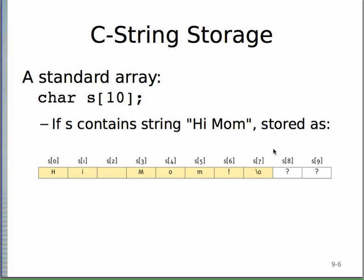In memory, arrays always have contiguous storage — location zero is right next to location one, which is right before location two, and so on. This is true for arrays in C++, C, Java, and C#. It's why using loops with arrays is very efficient: the loop just steps through consecutive memory locations, which is easy to optimize at a low level.